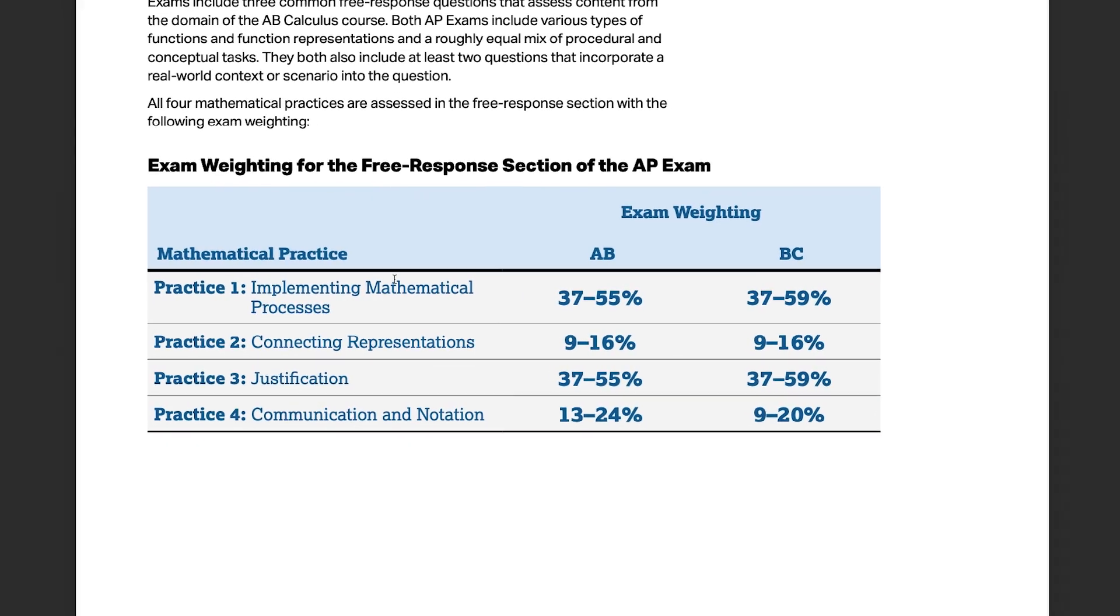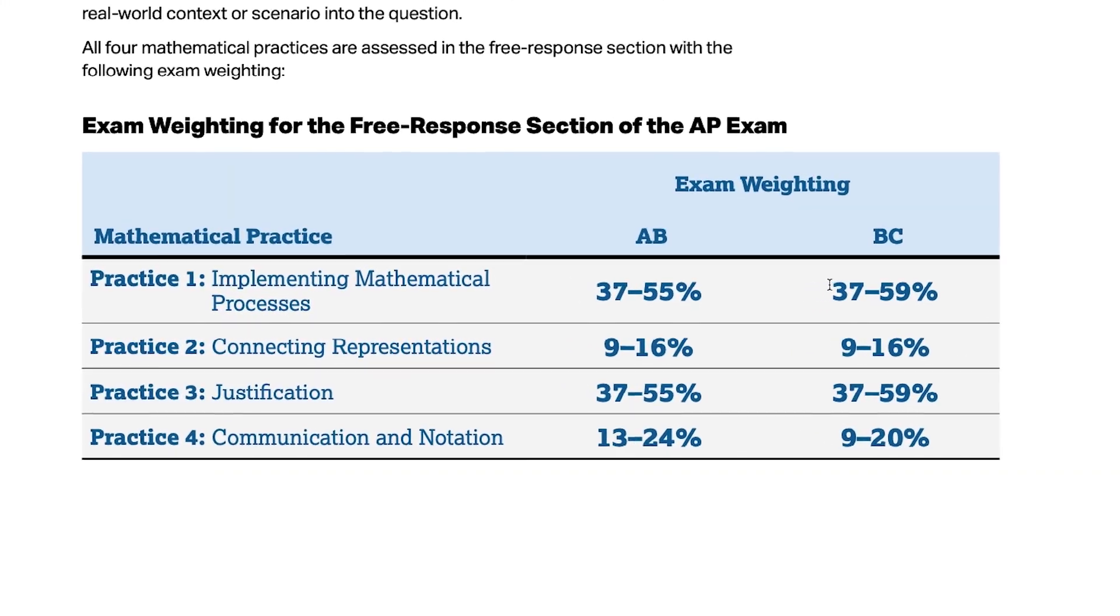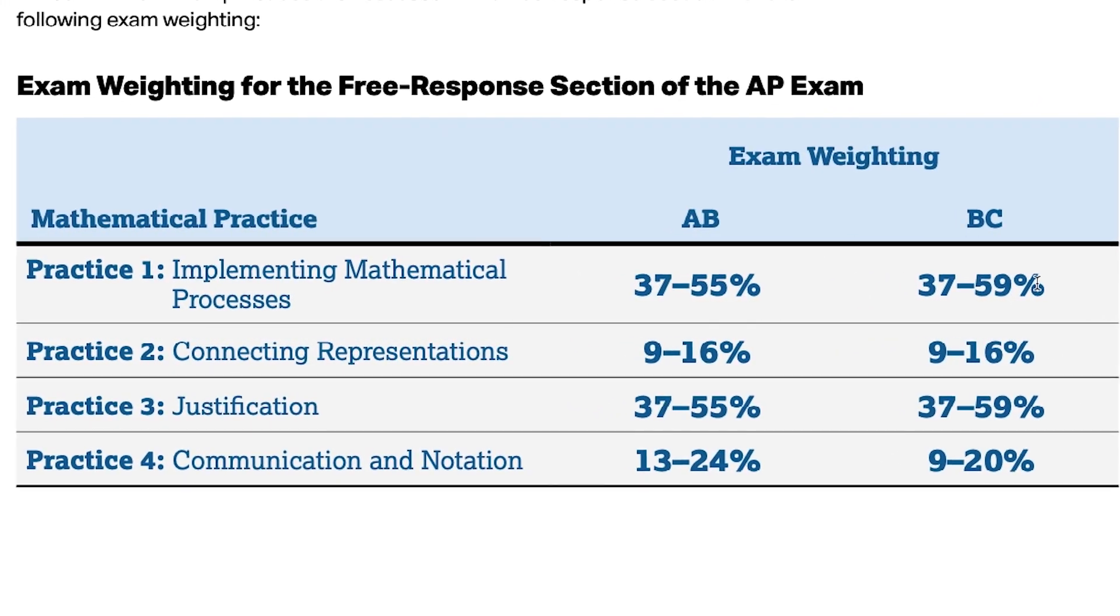So just being able to do the math, implementing the mathematical processes, you're going to earn 37 to 59%. Connecting representations is this percent here. Justifying your work is some percent here. But this is a massive one that gets a lot of students. Communication and notation. So in that previous example, that student not writing the absolute value of the error is an example of a communication notation mistake.